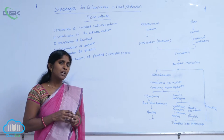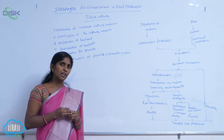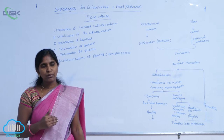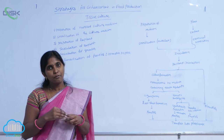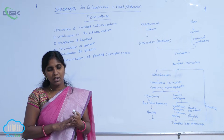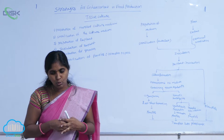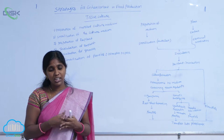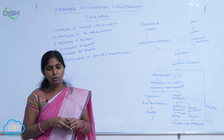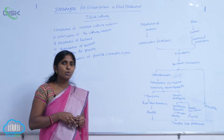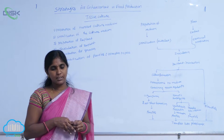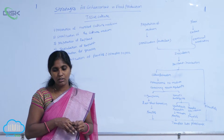Sometimes the explant also has contaminations. To avoid microbial contamination, go for sterilization processes. First, take and select the explant, wash with water, wash with detergent soap, and use a high amount of water for cleaning. Then inoculate it in sodium hypochlorite — incubate in sodium hypochlorite water for 5 to 10 minutes. During that incubation, it is freed from microorganisms.